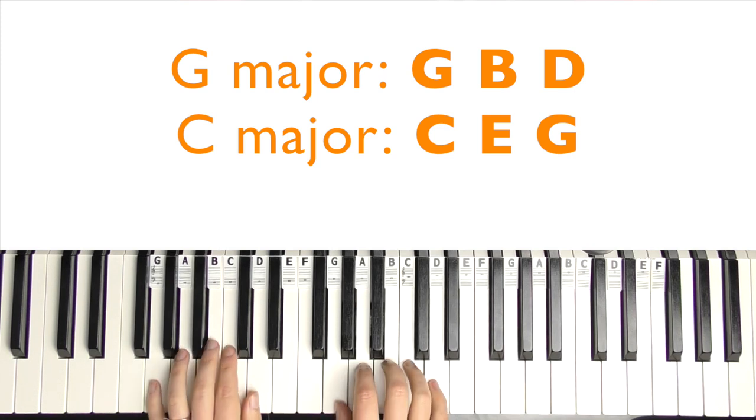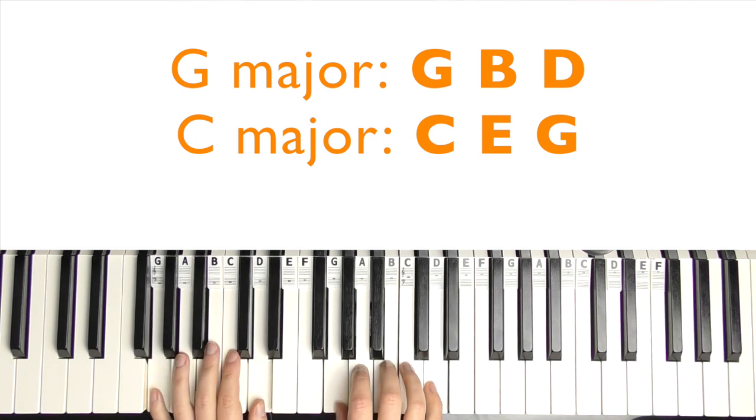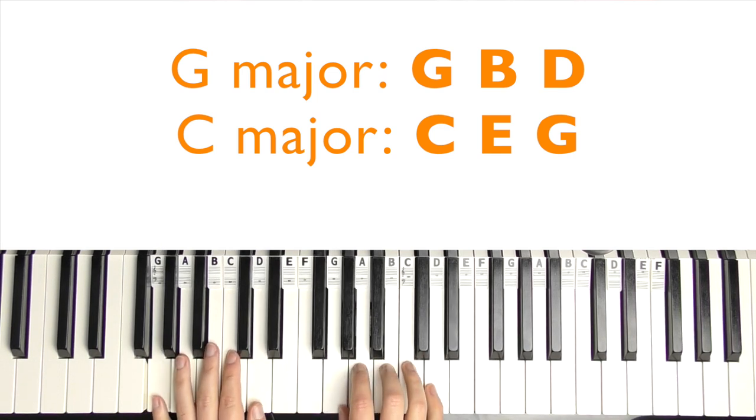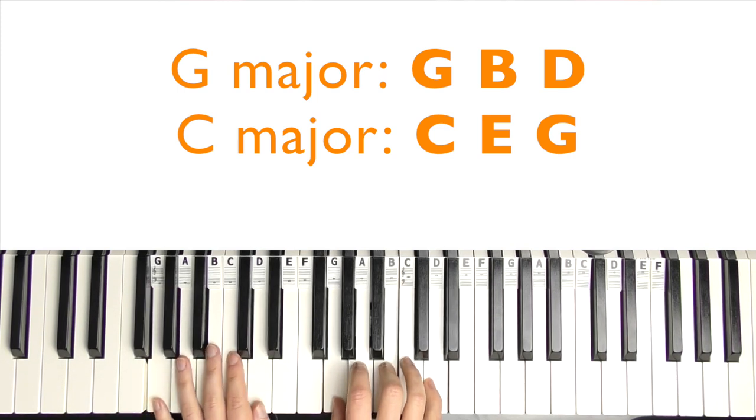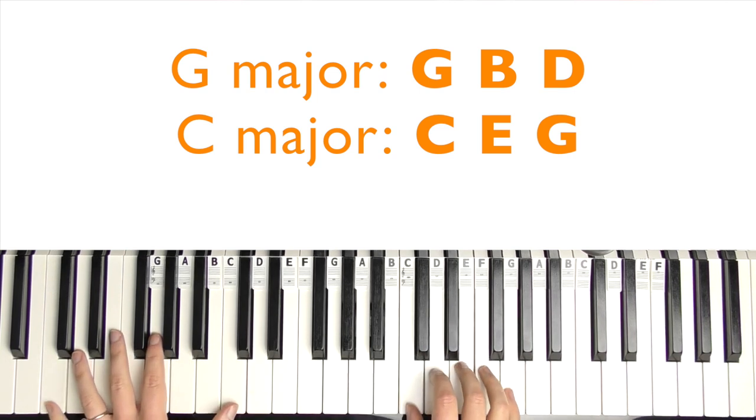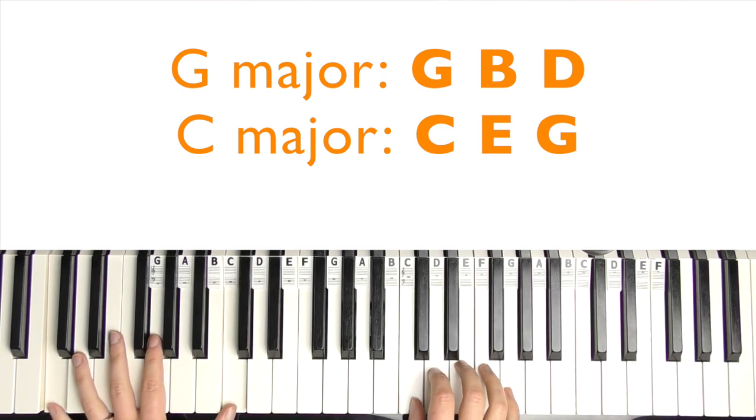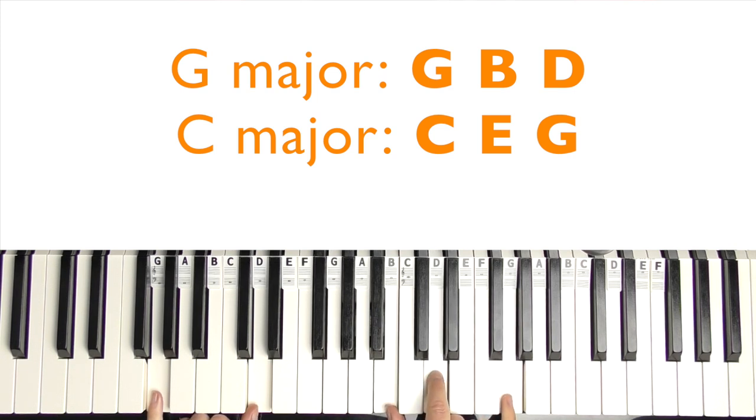Just an example. It's a dirty story of a dirty man. And his clinging wife doesn't understand. His son is working for the Daily Mail. But it's a steady job. But he wants to be a Paperback Writer. Paperback Writer. So at the end I just change the inversion from that G to this G. Writer.